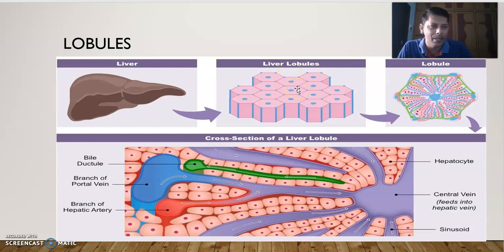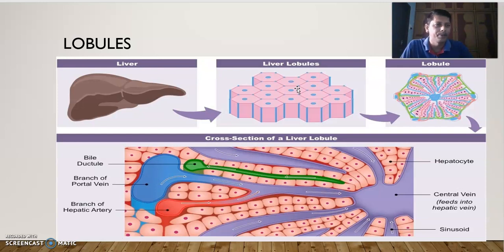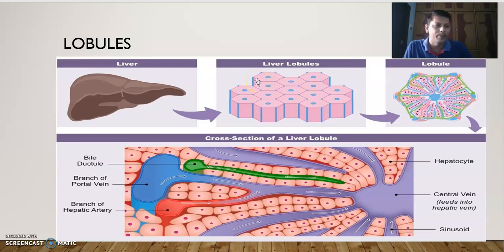Just as the kidney has millions of nephrons — nearly 1 million per kidney — which are the structural and functional units of the kidney, similarly our liver has hepatic lobules as its structural and functional units. Their shape is hexagonal, meaning they have six sides.